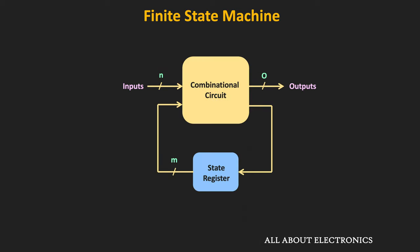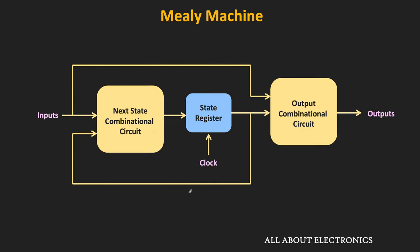The reason it is known as the finite state machine is because it has a finite number of internal states. Each FSM has a set of inputs and outputs and a finite set of internal states. In this finite state machine, depending on how the output is generated, we have two FSM models: the Mealy machine and the Moore machine.